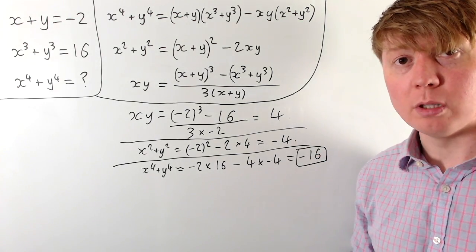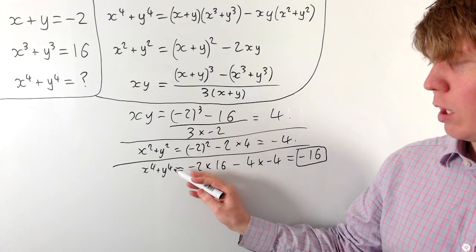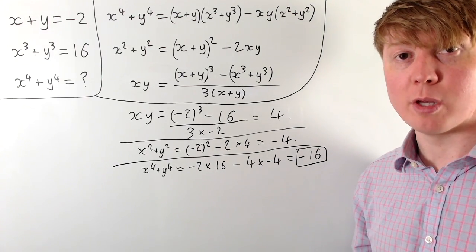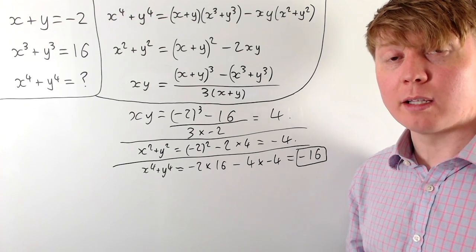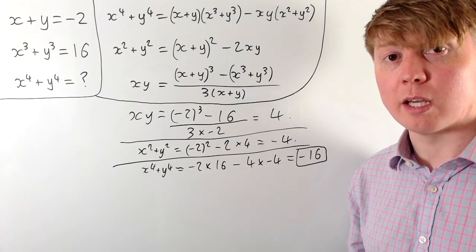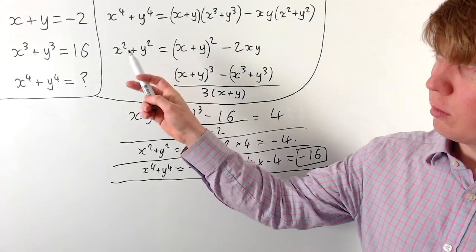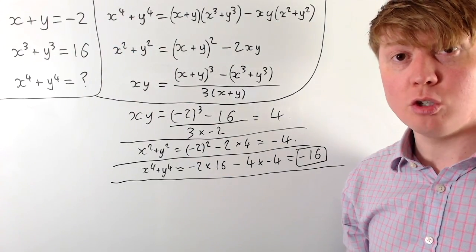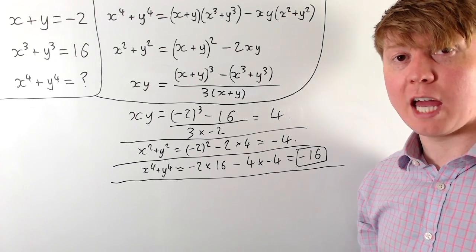At this point we've solved the problem, but it's really interesting to note that x to the 4 plus y to the 4 is negative 16. You would definitely expect this to be positive if x and y are real numbers. This reveals that x and y actually have to be complex numbers, since we never solved for them directly. You could verify this by substituting y equals negative 2 minus x into the cubic and solving to find complex solutions.